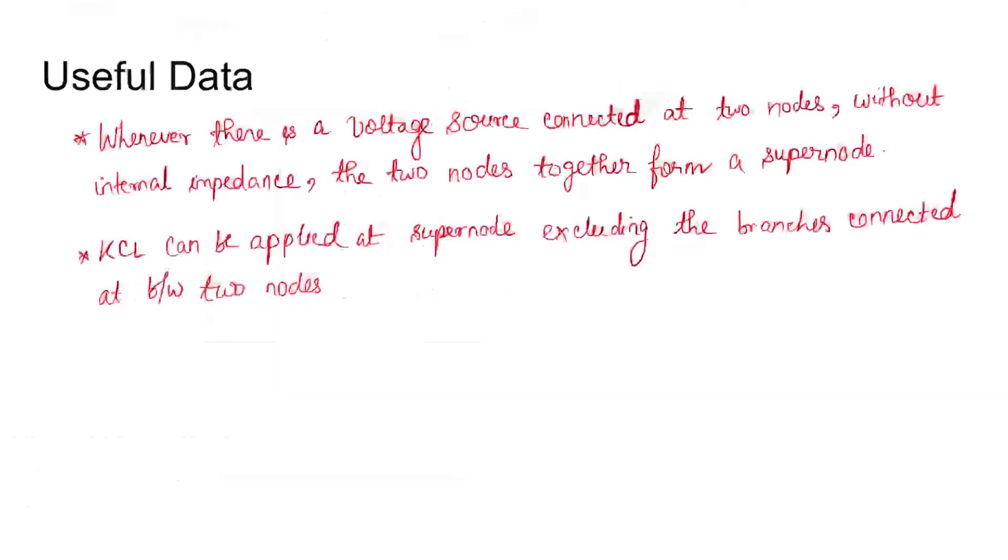The useful data that will be needed in order to solve this question is that whenever there is a voltage source connected at two nodes without internal impedance, the two nodes together form a super node. The KCL cannot be applied directly for individual nodes if a voltage source is connected between them.